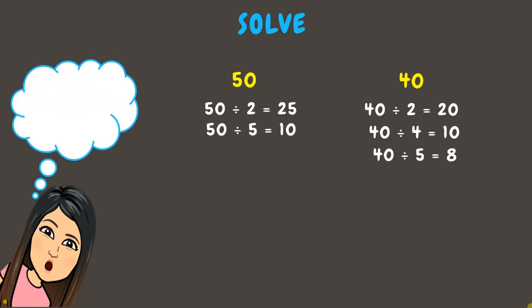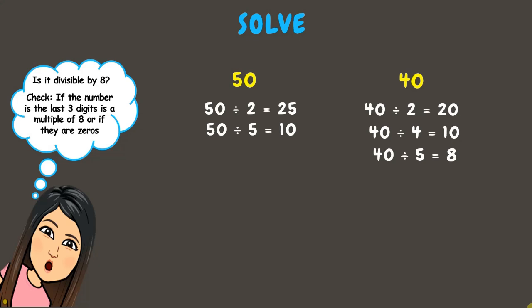Now let's try divisibility by 8: check if the last 3 digits are divisible by 8, or if they are zeros. For 50, the last 3 digits are 050, which is not divisible by 8. For 40, the last 2 digits are 40, which is divisible by 8. We can see that we already got 8 as a factor when we divided 40 by 5.